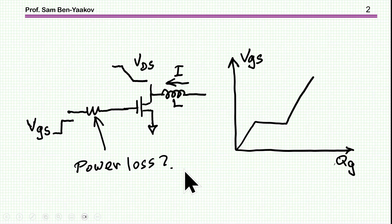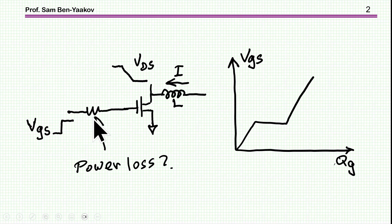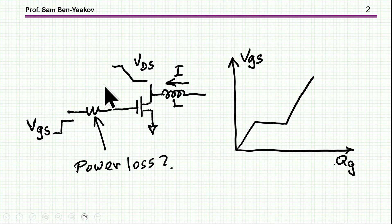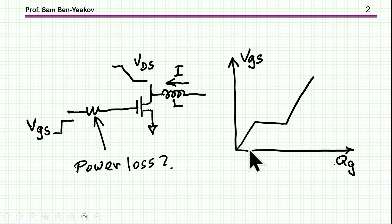I'm focused in this presentation on the losses of the gate driver resistance. This resistor represents the total resistance including the driver itself, and the question is how much power is lost in this resistor so we can select it for proper power dissipation. I'm looking at a MOSFET concentrating on the turn-on time, when the drain voltage will go down at a given fall time. The relevant data for solving the question of losses is the gate charge versus gate voltage plot, where we see the so-called Miller Plateau.